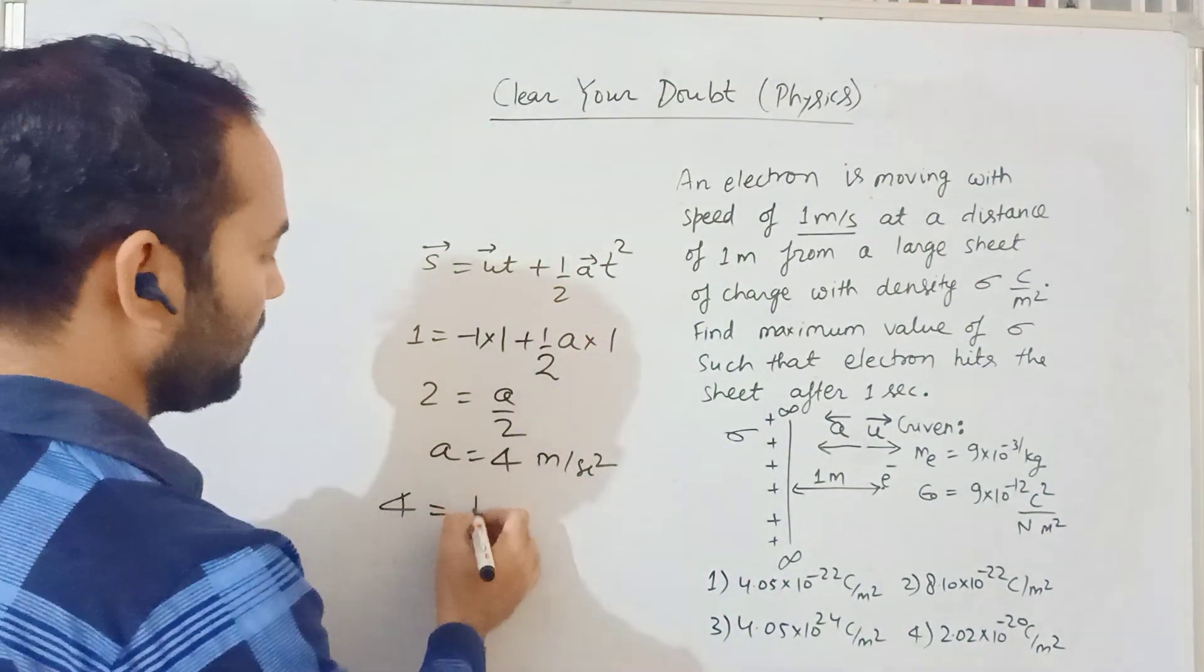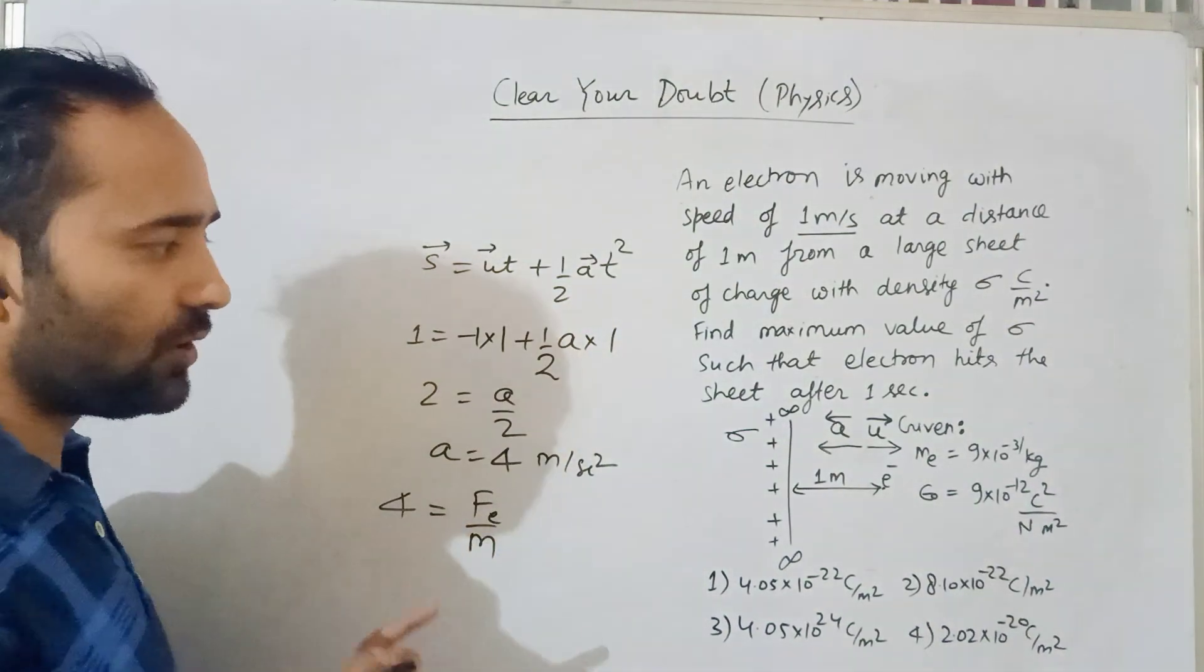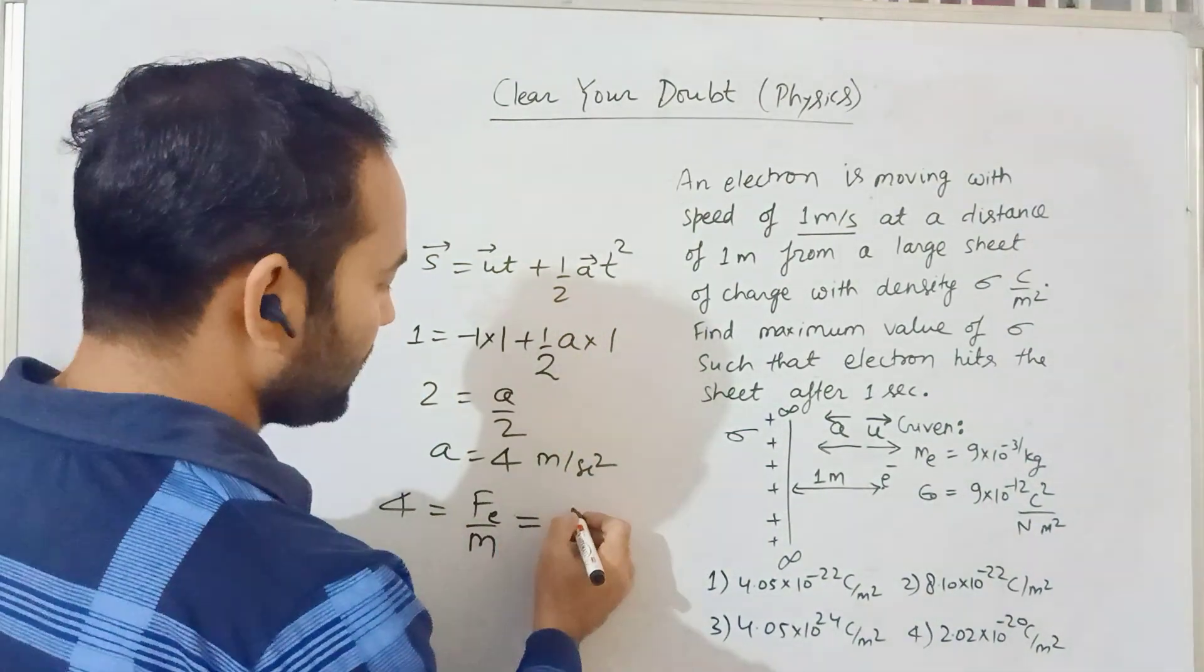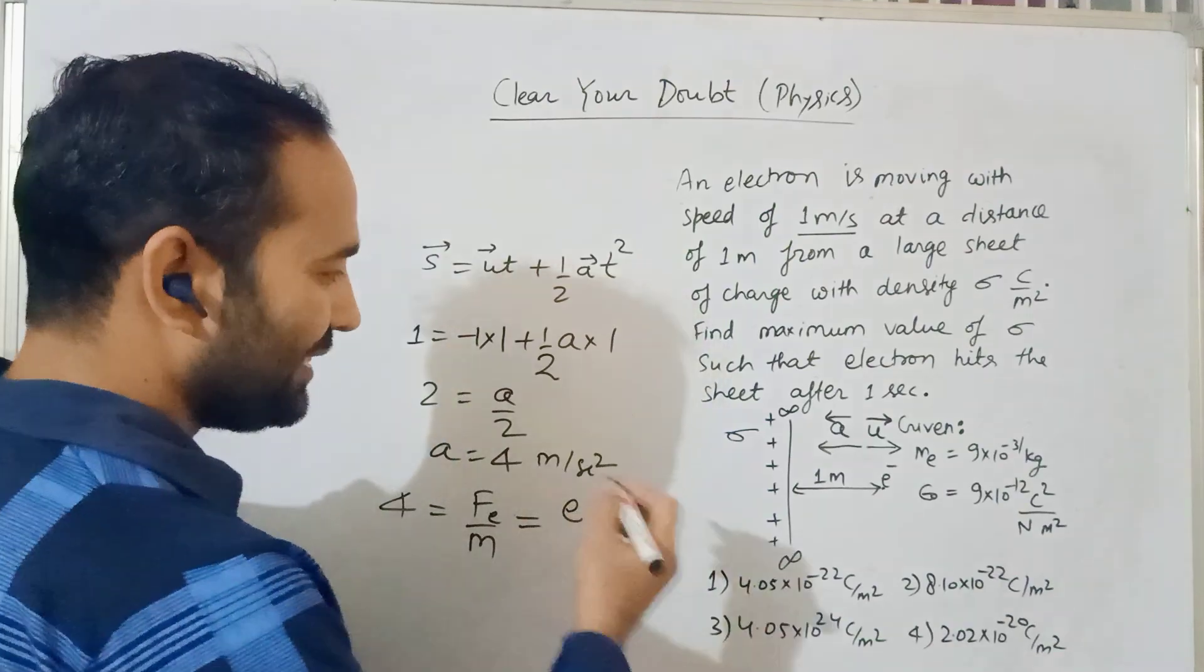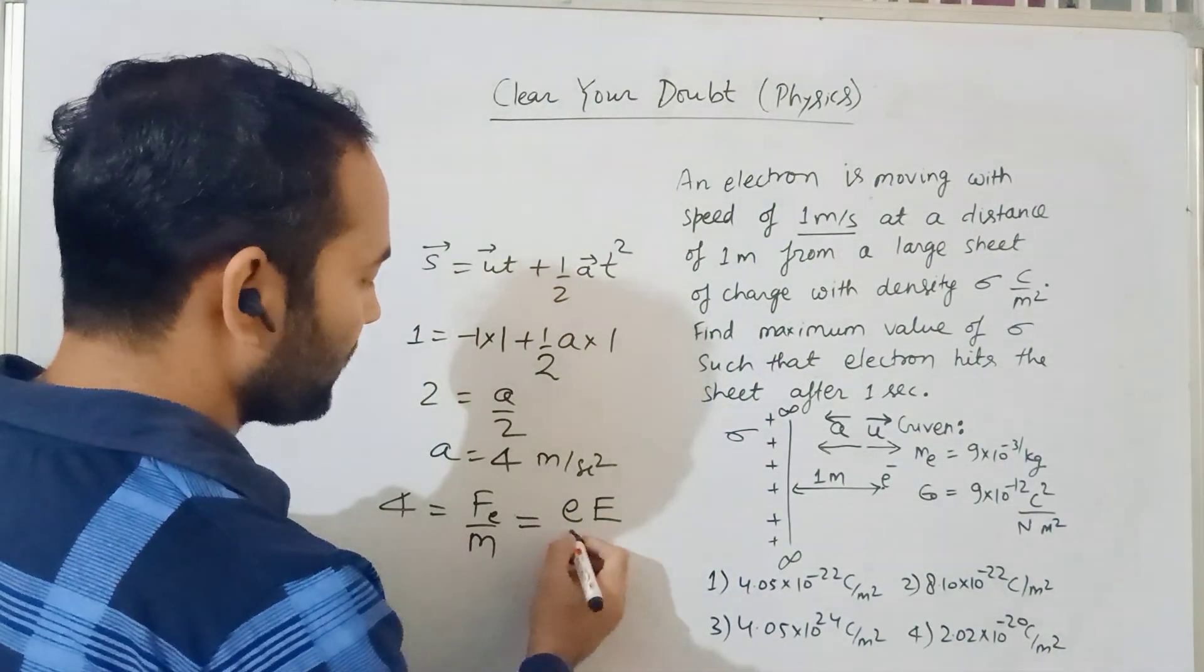What acceleration is acting on this? Force upon mass. What force? Electric force is acting. Electric force is charge times electric field upon mass: a = qE/m.